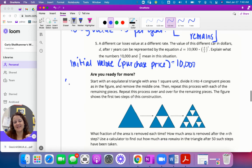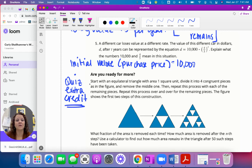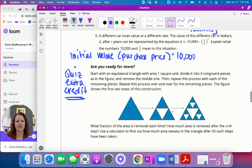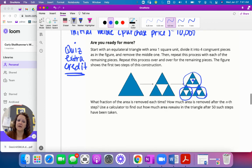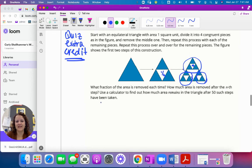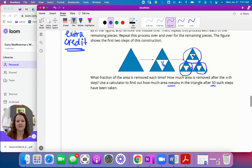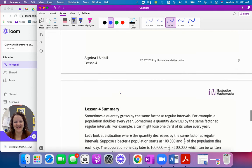Alright. Are you ready for more? Hey, do you want some quiz extra credit points? I'm getting your emails when you're doing them. I write them down on my little post-it note. Okay. So I'm keeping track. Send me an email. And I will reply back to you. Start with an equilateral triangle with area one square unit. Divide it into four congruent pieces. And remove the middle. And then repeat it. Here. Divide it into four. Remove the middle. Here and here. Divide it into four. Remove the middle. What fraction of the area is removed each time? So if I split it into four pieces and I remove it. I'm removing a fourth. Okay. What's remaining? Now how much area is removed after the nth step? Use a calculator to find out how much remains in the triangle after 50 such steps have been taken. Go ahead and try it. And that is it for today.